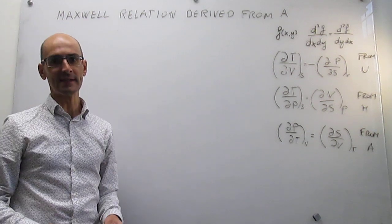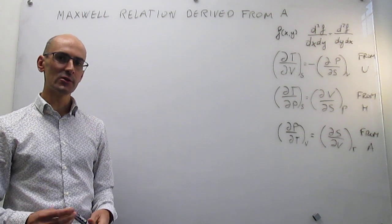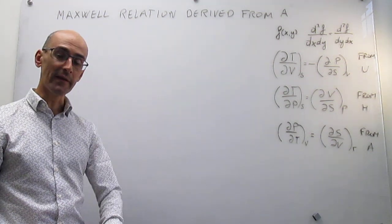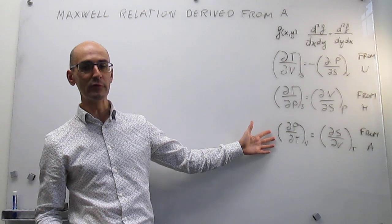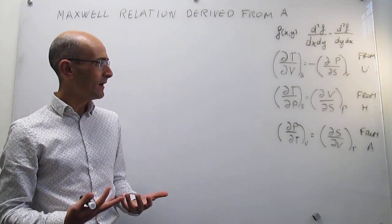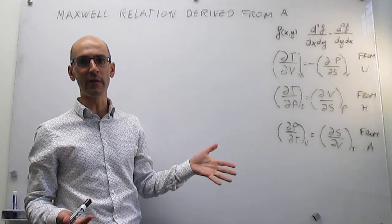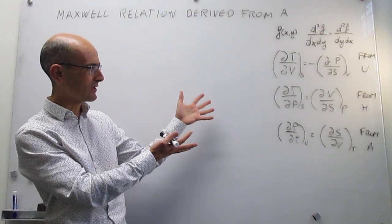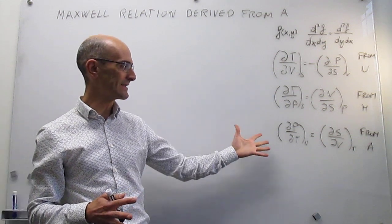In this video, we are going to take a deeper look at the Maxwell relation derived from the Helmholtz energy so that we can begin to understand the usefulness of Maxwell relations. In the prior video, we have seen that you can derive this Maxwell relation from the fundamental equation of the Helmholtz energy. Until now, it's not obvious what these things mean or what their use is, and some people might be a little overwhelmed by the implication of these equations. So we're going to take a few minutes to see how useful these things are.